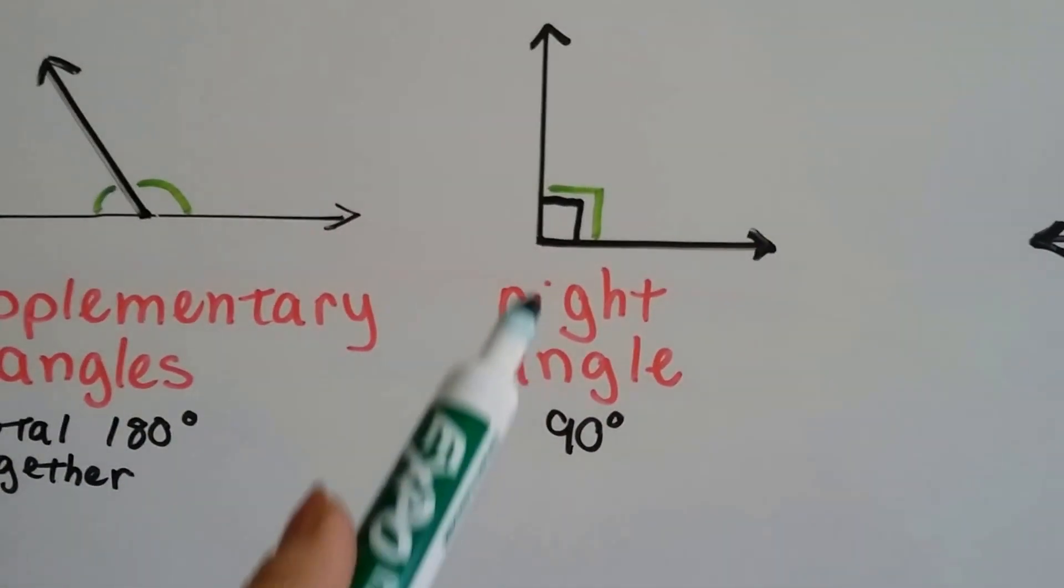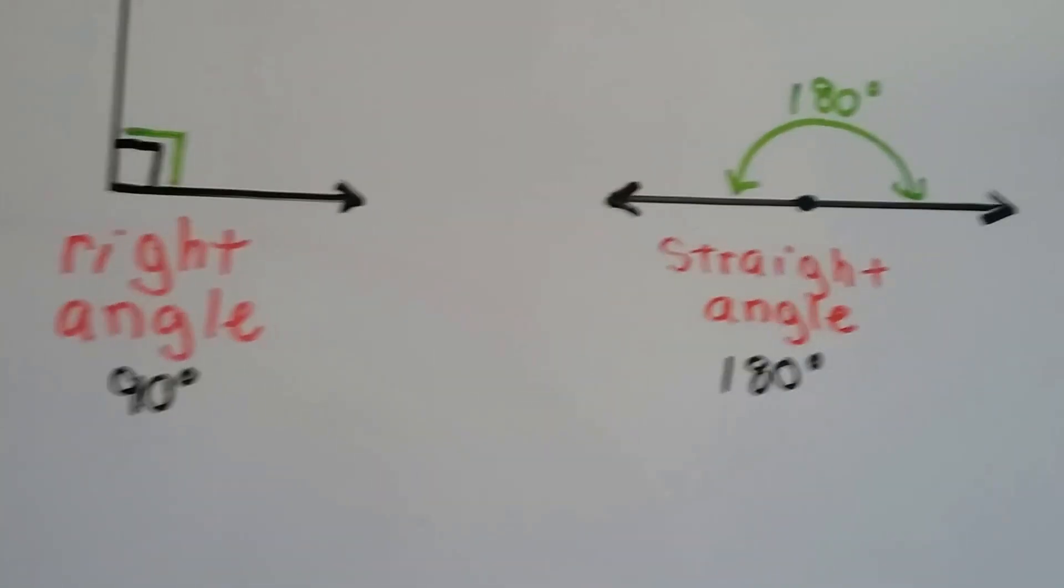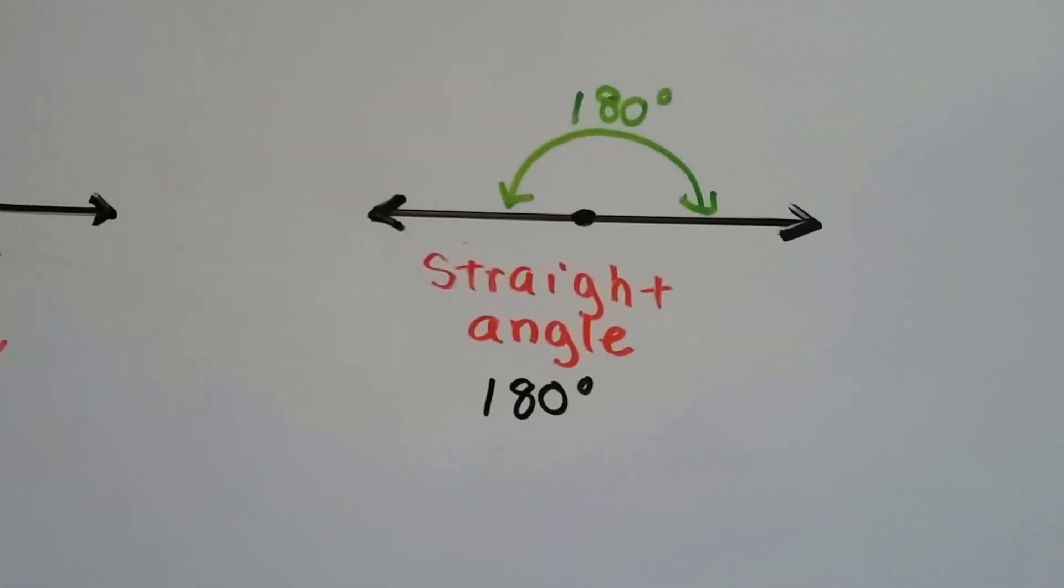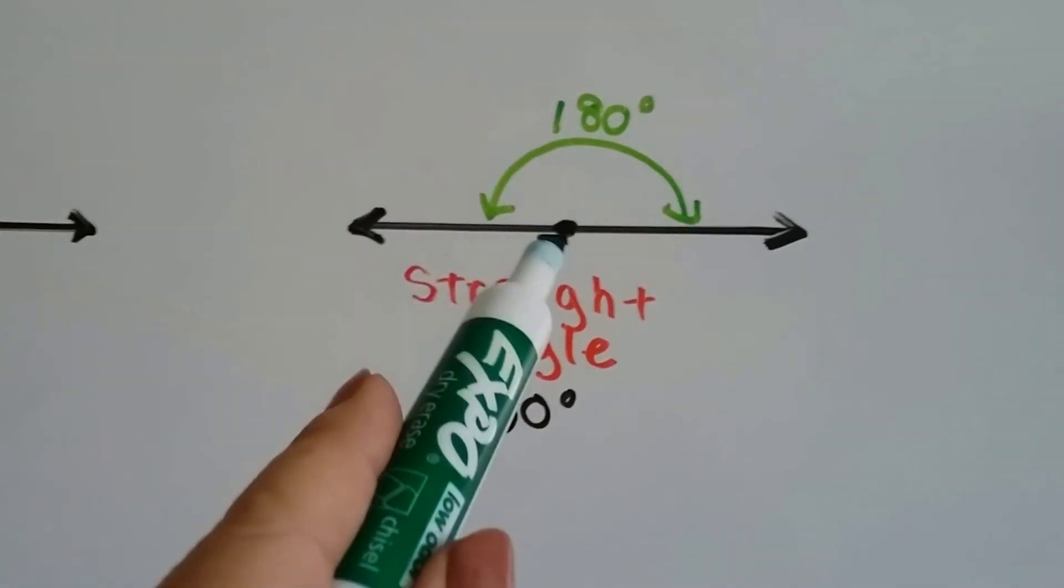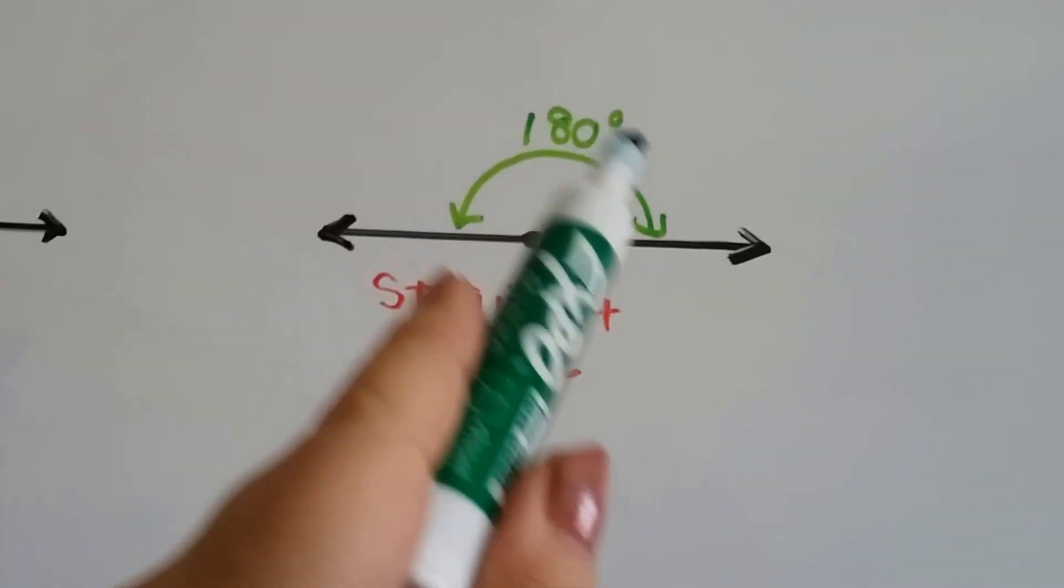A right angle is 90 degrees and we know it's a right angle when we see this little box. And a straight angle is actually a line with a vertex in the center and it totals 180 degrees.